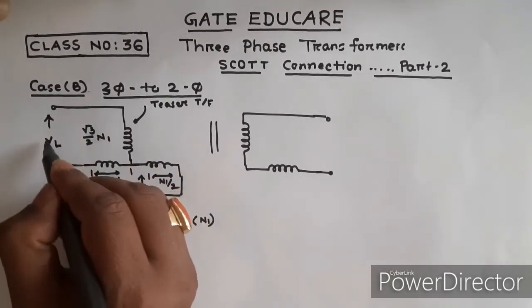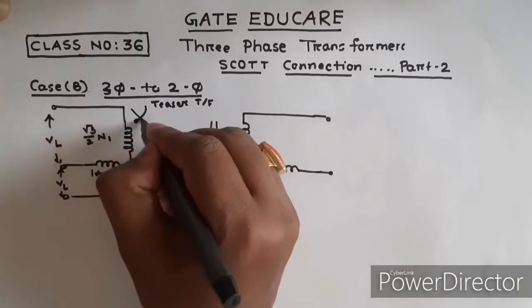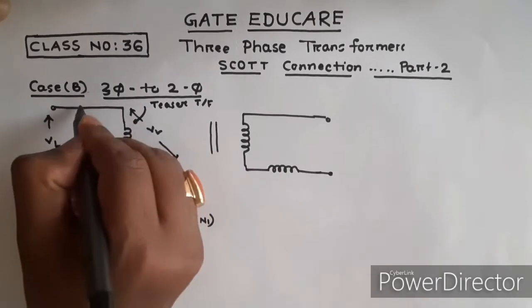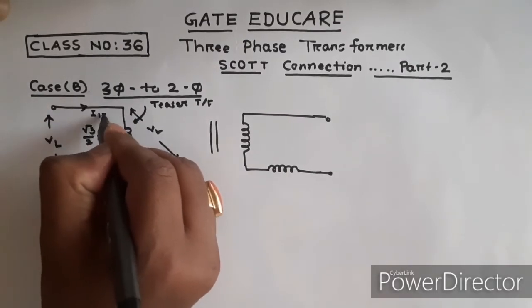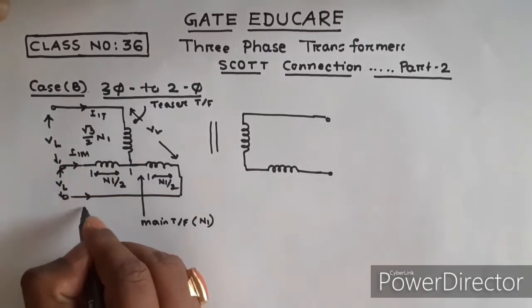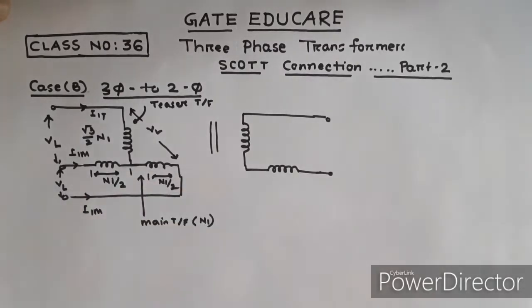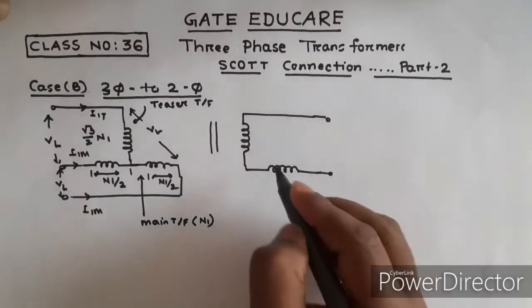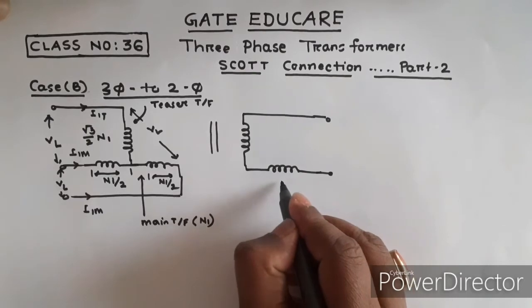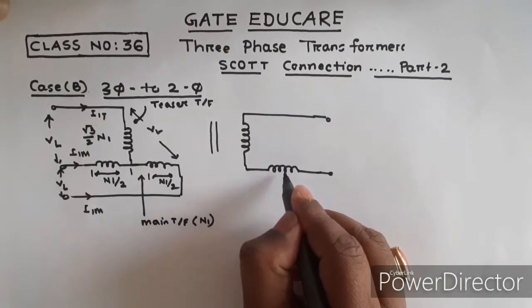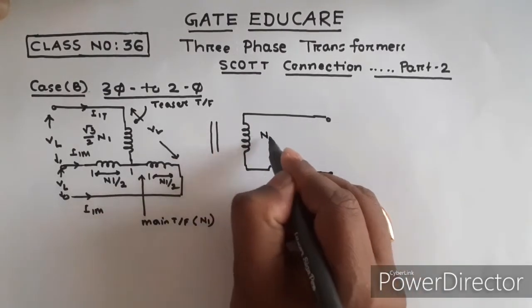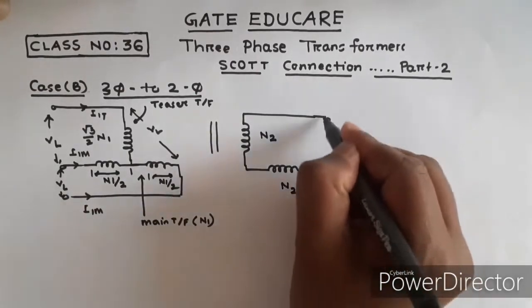Let VL be the line voltage. The teaser transformer primary current is I1T and the main transformer primary current is I1M. The secondary of the main transformer is not center-tapped. If the secondary of the main transformer has N2 number of turns, then the secondary of the teaser transformer must also be N2 number of turns to get a balanced output.